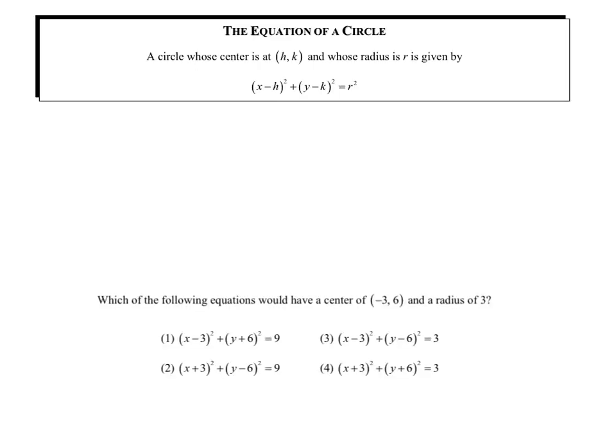Before we dive right in, let's review the equation of a circle so you can get this box in your notes. A circle whose center is at h, k, and whose radius is r is given by this formula: x minus h squared plus y minus k squared equals r squared. You should know this formula by heart.